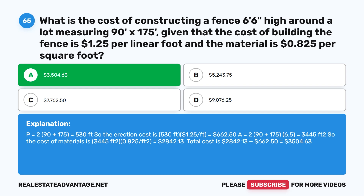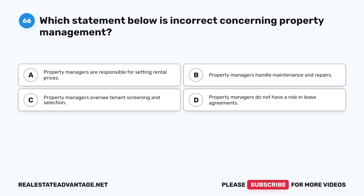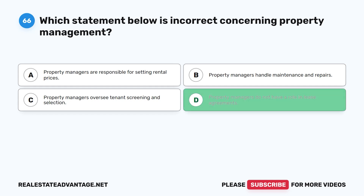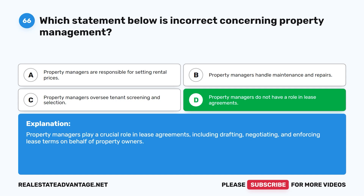Question 66: Which statement below is incorrect concerning property management? A. Property managers are responsible for setting rental prices. B. Property managers handle maintenance and repairs. C. Property managers oversee tenant screening and selection. D. Property managers do not have a role in lease agreements. The correct answer is D: Property managers do not have a role in lease agreements — this is incorrect. Property managers play a crucial role in lease agreements, including drafting, negotiating, and enforcing lease terms on behalf of property owners.